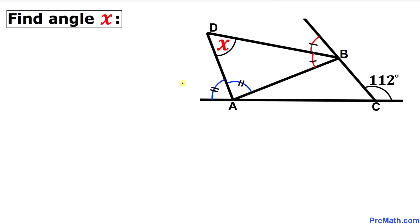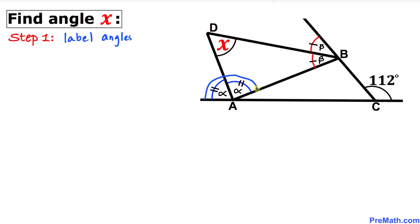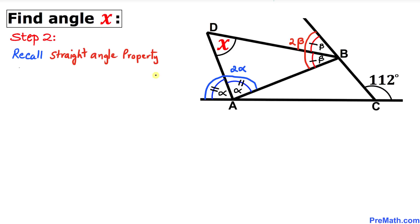Let's go ahead and get started with the solution. Here's our very first step: let's label these angles. Let's focus on these blue angles since they are congruent. I'll call this angle alpha, then this angle has to be alpha as well. Likewise, for these red angles, I'm going to call this angle beta, then this angle is going to be beta as well. So this whole angle becomes alpha plus alpha, which makes 2 alpha, and likewise this whole angle becomes beta plus beta, which makes 2 beta.